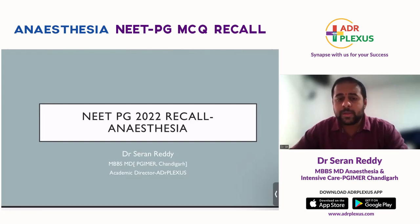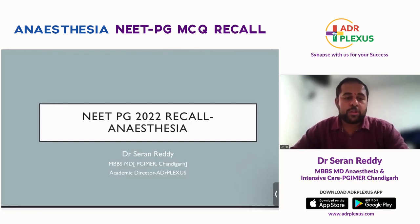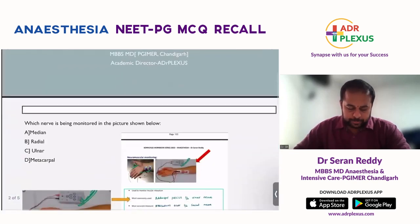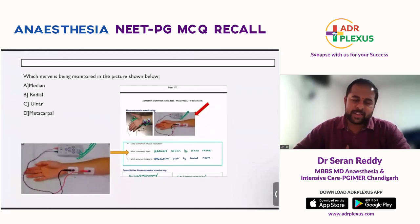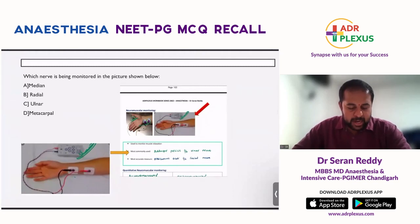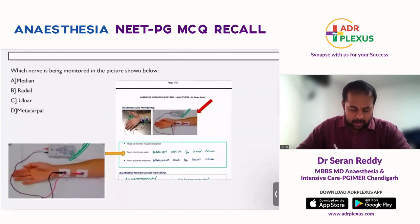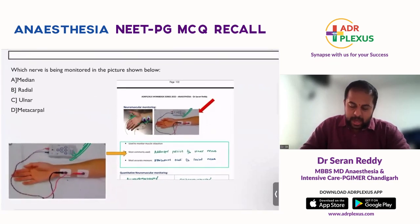The good thing is both the images and both the topics — including the similar images — we have discussed in class. I hope every one of you got both questions correct. The first question asks: which nerve is being monitored in the picture shown below? I'm pretty sure every one of you got the answer correct. The options are median, radial, ulnar, and metacarpal. The image shows the ulnar nerve being monitored.